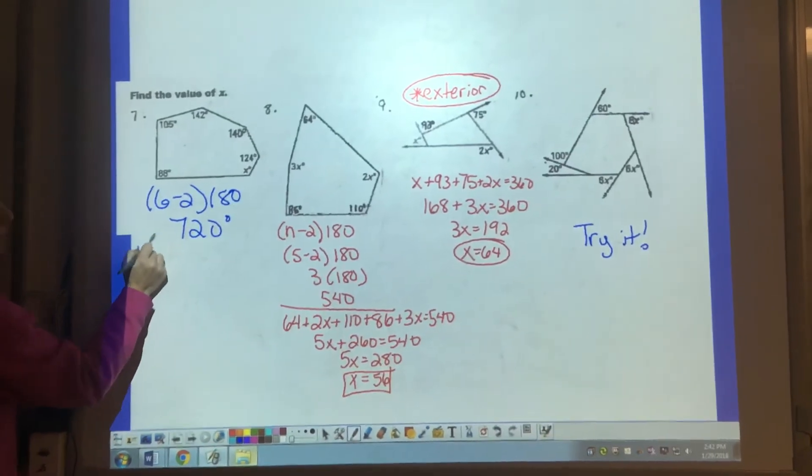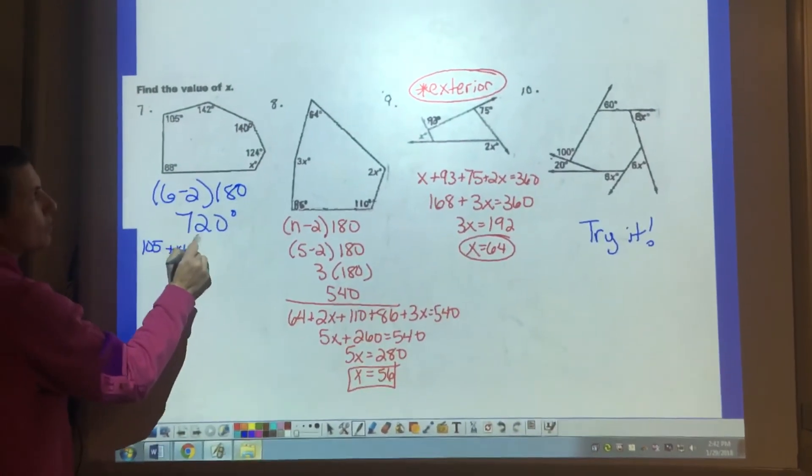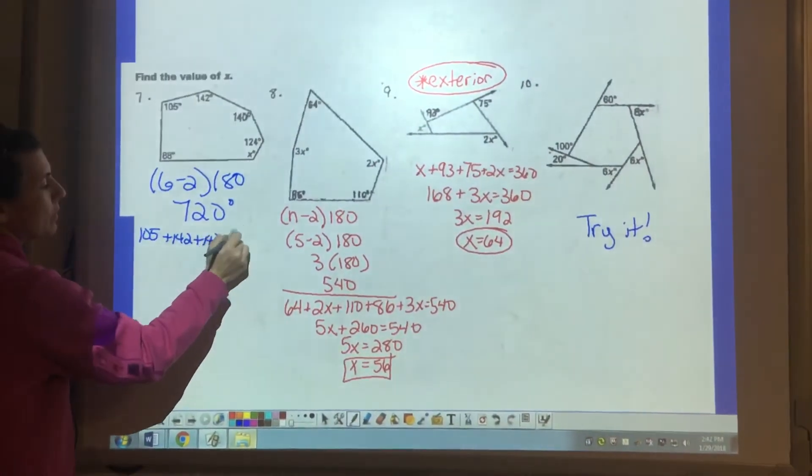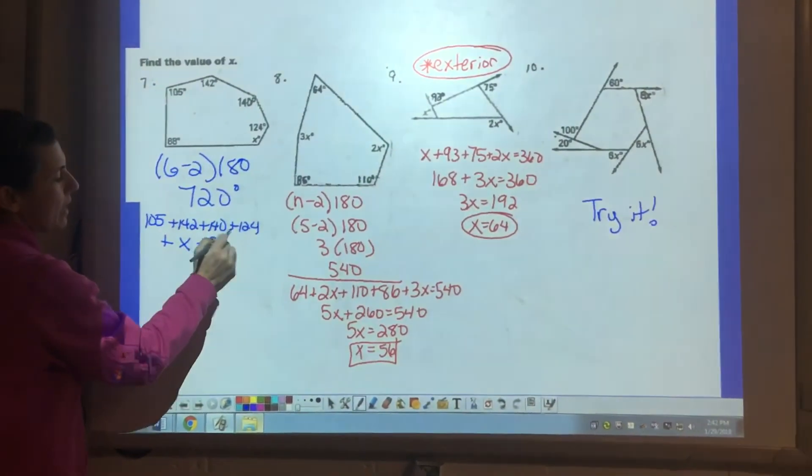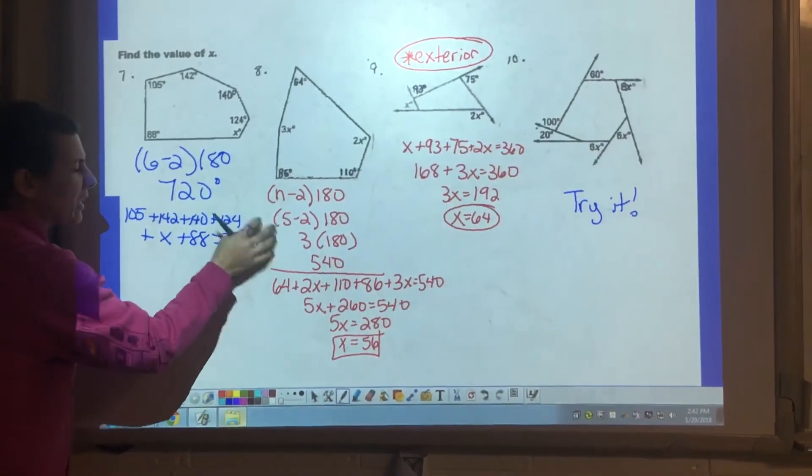So my equation would be 105 plus 142 plus 140 plus 124. I'm going to have to wrap this around. Plus x plus 88 equals 720. It's a long equation, but many of them are just numbers.